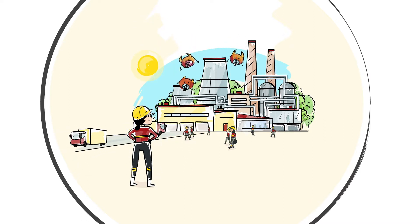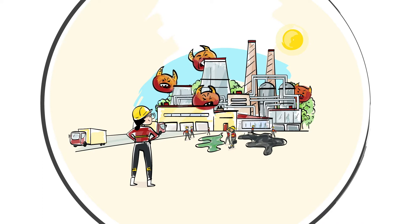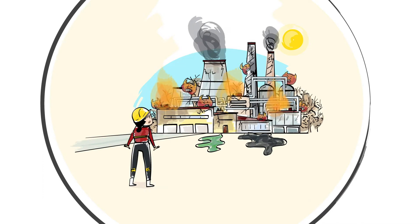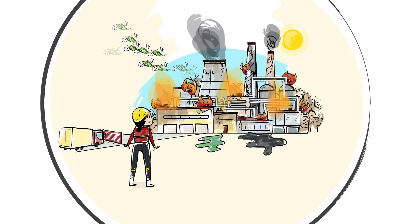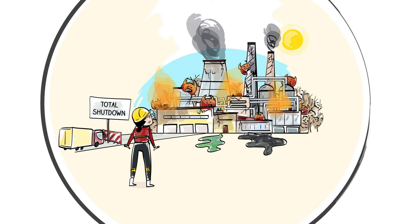But what Alex doesn't see are the developing unexpected problems going undetected deep inside the processes and equipment parts. A couple of days later, when she will have noticed them, it will be too late. Small problems will have grown into complicated and expensive ones that could cause production losses or, even worse, a total shutdown of the plant.